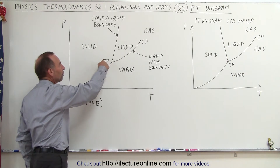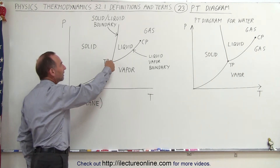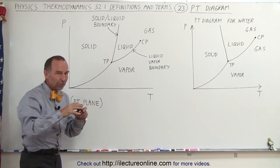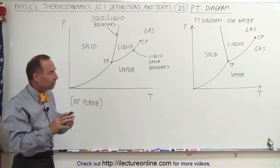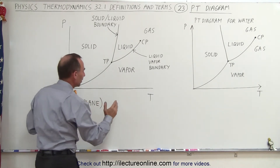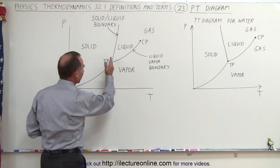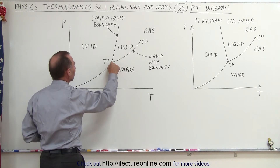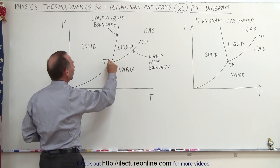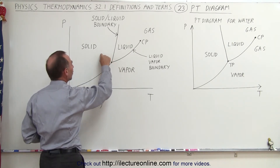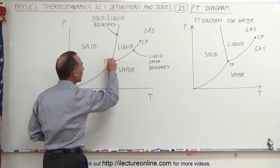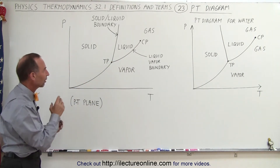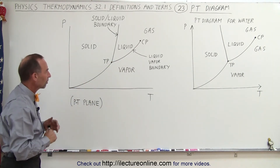We also have what we call the triple point. At that particular temperature and pressure — ignoring volume — the substance can be in all three phases at the same time. Solid, liquid, and vapor can exist simultaneously at that particular temperature and pressure. That's what we mean by the triple point.